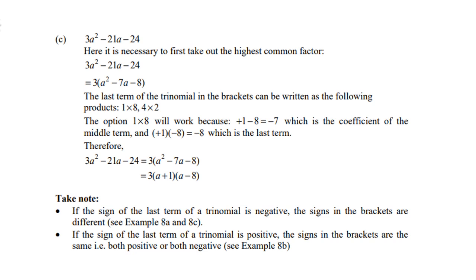Let's look at example C. 3a² - 21a - 24. Now here, it is necessary to first take out the highest common factor, and it is namely 3. So there we are. 3a² - 21a - 24 equals to 3 into (a² - 7a - 8).